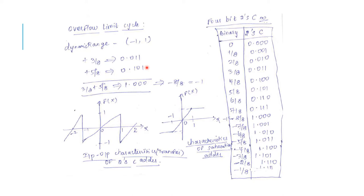The possible numbers for 4-bit representation can be taken as an example. The dynamic range is minus 1 to 1. Let us add two numbers, plus 3/8 and plus 5/8, in two's complement. The binary addition of these two values gives 1.000, which is supposed to be plus 1, but due to overflow it has become minus 1. This is the sign bit. So the actual sum we should get is plus 1, but overflow produces minus 1.